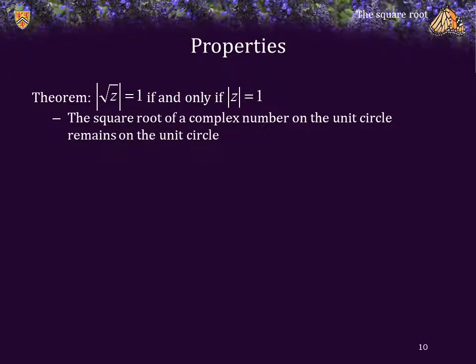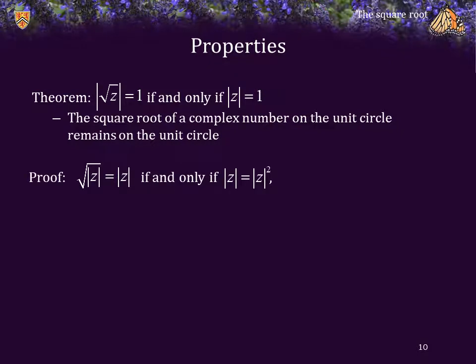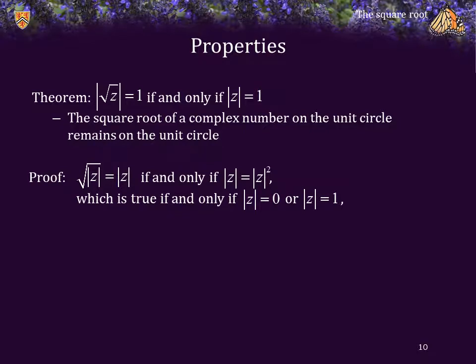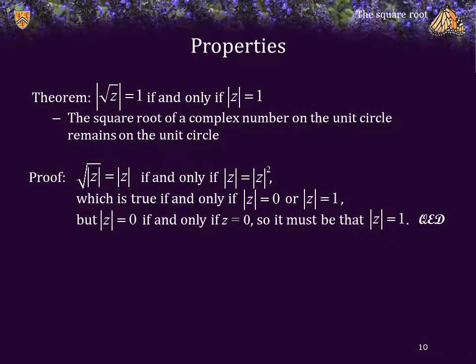Here's a property — theorem. The magnitude of the square root of z is equal to 1 if and only if the magnitude of z is equal to 1. That says the square root of a complex number on the unit circle remains on the unit circle. Proof: the square root of the magnitude of z equals z if and only if the magnitude of z equals the magnitude of z squared, by squaring both sides. This is true if and only if the magnitude of z equals 0 or the magnitude of z equals 1. But if the magnitude of z equals 0, that's true if and only if z equals 0, so therefore it must be that the magnitude of z is equal to 1 in the case above.